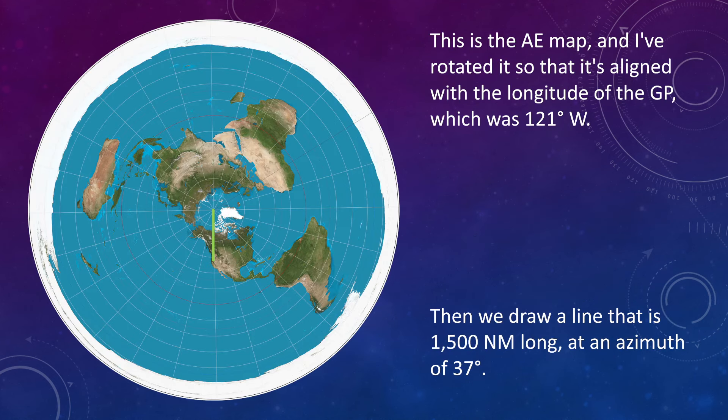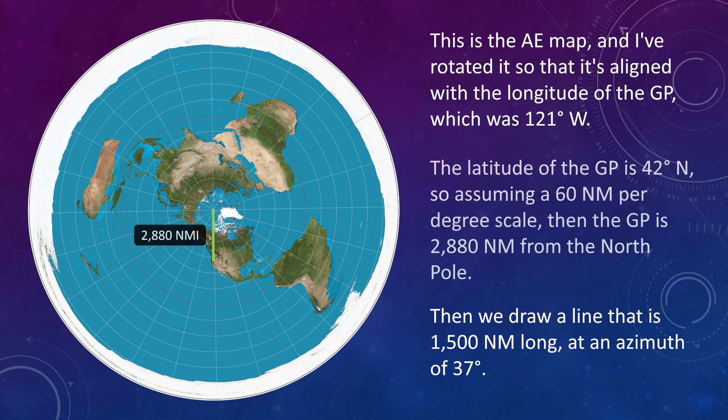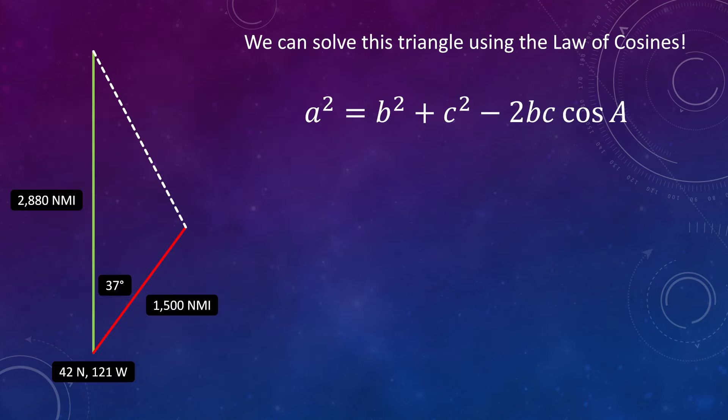And that means we need to do some geometry. So this is the AE map and what I've done is rotate it such that it's aligned on the longitude of the GP which was 121 west. The latitude of the GP is 42 degrees north, so assuming a 60 nautical miles per degree scale then the GP is 2880 nautical miles from the north pole. And then we draw a line that is 1500 nautical miles long at an azimuth of 37 degrees. And what we want to find are the coordinates for the point at the end of that red line. So how do we do that?